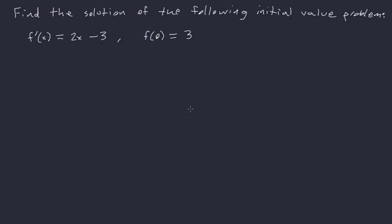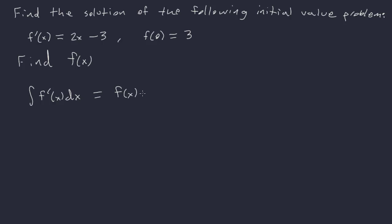Here's often how this will be presented to you. It would say: find the solution of the following initial value problem — f prime of x equals 2x minus 3, where f of 0 equals 3. So it's giving you a derivative, and then it's giving you what we would call an initial value, f of 0 equals 3. We can find f of x using the integral: the integral of f prime of x dx should be just f of x plus a C.